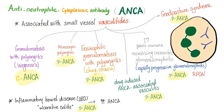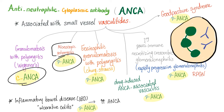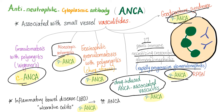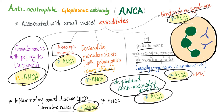ANCA-associated small vessel vasculitides: granulomatosis with polyangiitis — C-ANCA. Microscopic polyangiitis — P-ANCA. Churg-Strauss syndrome — P-ANCA. Goodpasture syndrome or anti-glomerular basement membrane antibody — P-ANCA. Primary pauci-immune necrotizing crescentic glomerulonephritis, also known as rapidly progressive glomerulonephritis — P-ANCA. Drug-induced ANCA-associated vasculitis — P-ANCA. Ulcerative colitis-associated vasculitis — P-ANCA. All of them are P-ANCA except granulomatosis with polyangiitis, which is C-ANCA.